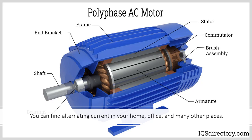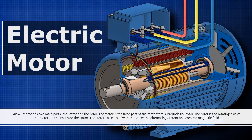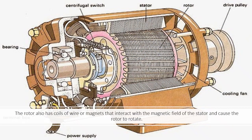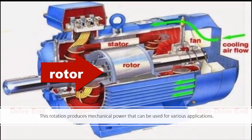An AC motor has two main parts: the stator and the rotor. The stator is the fixed part of the motor that surrounds the rotor. The rotor is the rotating part of the motor that spins inside the stator. The stator has coils of wire that carry the alternating current and create a magnetic field. The rotor also has coils of wire or magnets that interact with the magnetic field of the stator and cause the rotor to rotate. This rotation produces mechanical power that can be used for various applications.